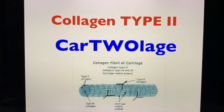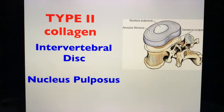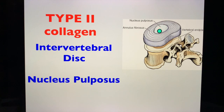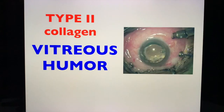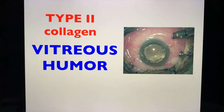Type 2 collagen is found in your cartilage — remember the mnemonic: type 2 is cartilage. Aside from cartilage, type 2 is also found in the intervertebral disc and the nucleus pulposus. When you have a herniated disc, it's the nucleus pulposus that herniates posterolaterally, impinging the nerves. Type 2 collagen is also found in your vitreous humor.